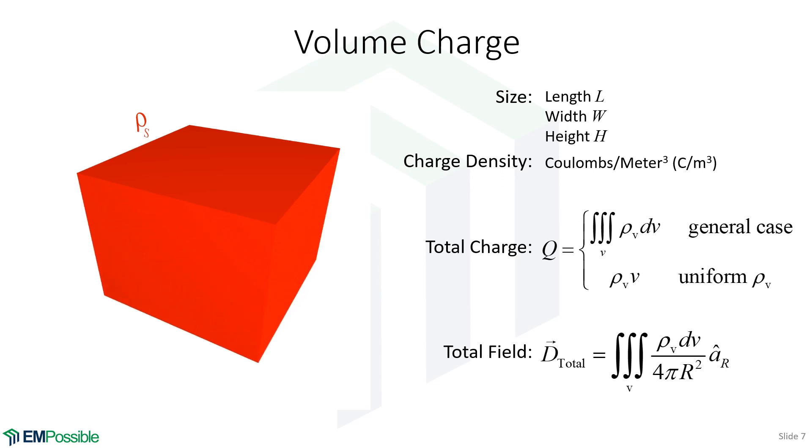Last, we have a volume charge. In my mind, I start off with a surface and extrude that in the remaining dimension. If we distribute charge over that, we now have a volume charge density. We're converting the surface charge density, which had units of Coulombs per meter squared, to a volume charge density ρ_v, Coulombs per meter cubed.